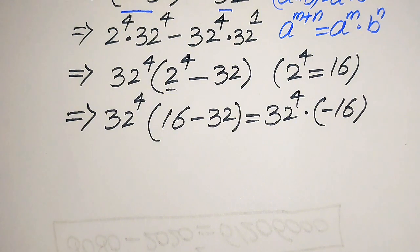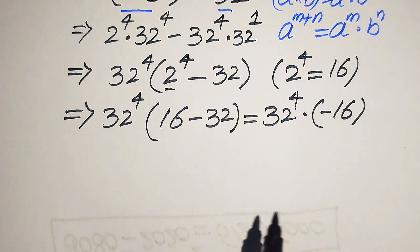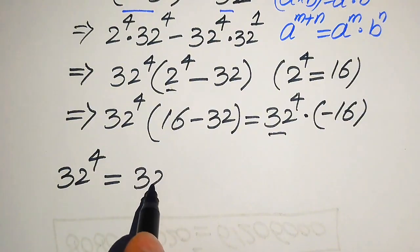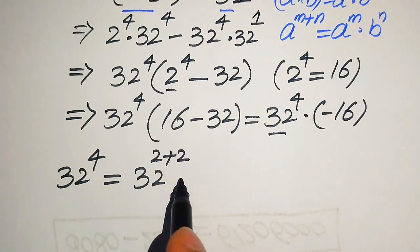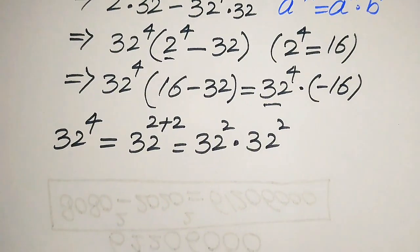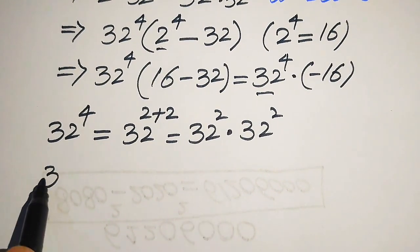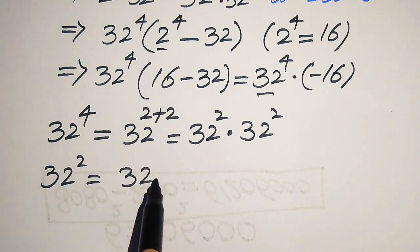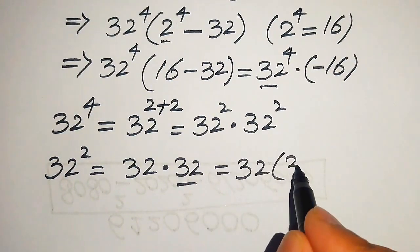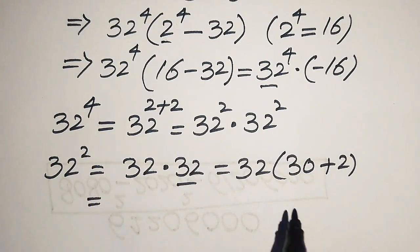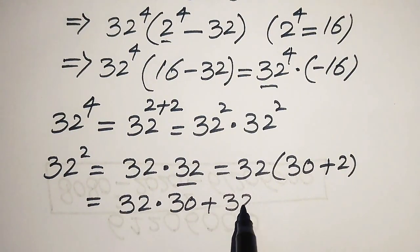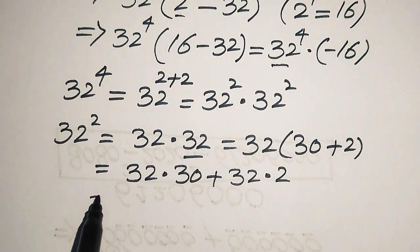Now, because a calculator is not allowed, I will do all of these calculations manually. Our next target is to find the value of 32 to the power of 4. We break the exponent 4 as 2 plus 2, so it is written as 32 squared multiplied by 32 squared. First, we need to find the value of 32 squared, which means we multiply 32 by 32. We break 32 as 30 plus 2.